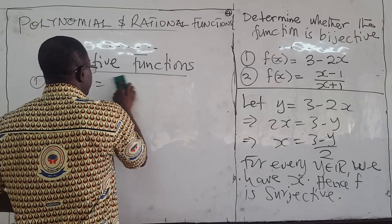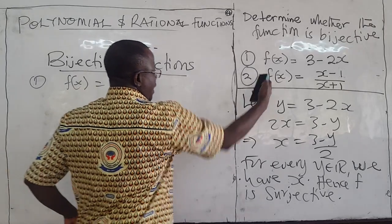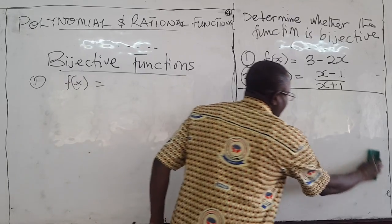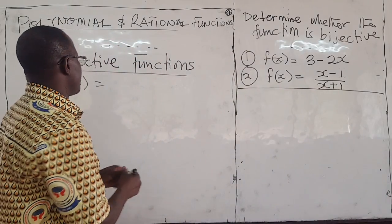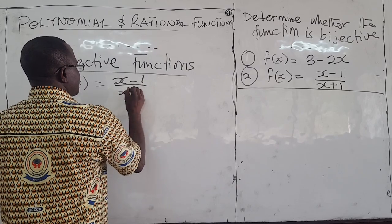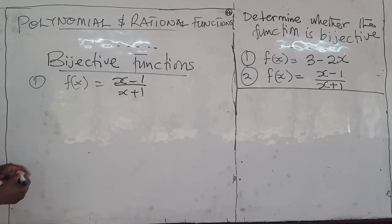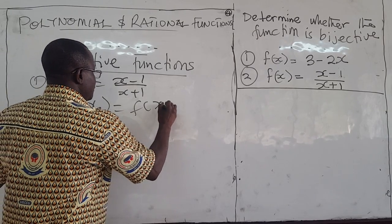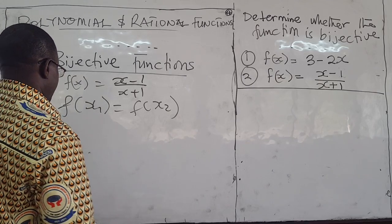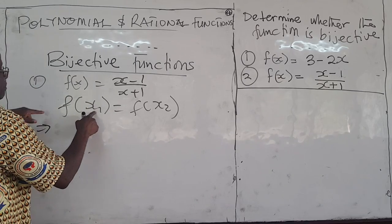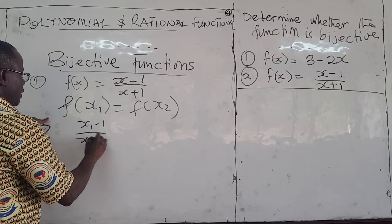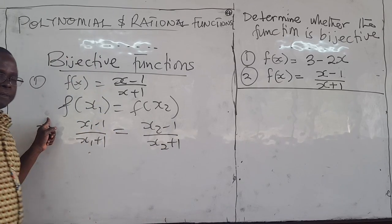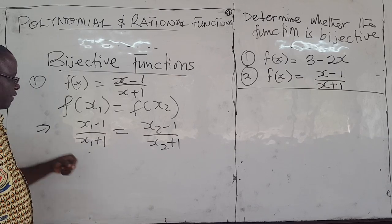So let's look at the second example. You can pause the video and try it. So we have f(x) = (x minus 1) over (x plus 1). Again, let x1 and x2 be real numbers, and let f(x1) equal f(x2). We want to check one-to-one first. From here, putting x1 in gives (x1 minus 1) over (x1 plus 1), and putting x2 gives (x2 minus 1) over (x2 plus 1).